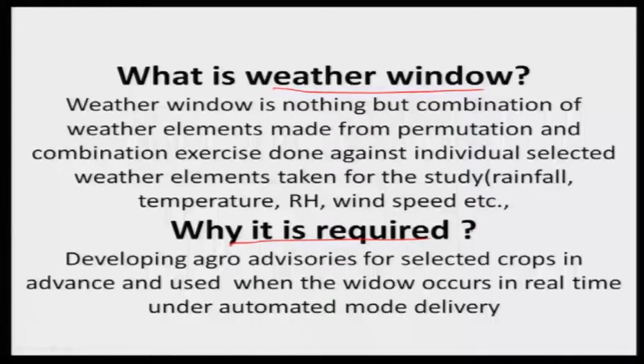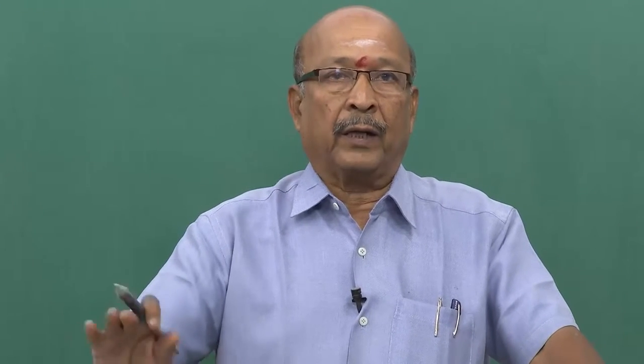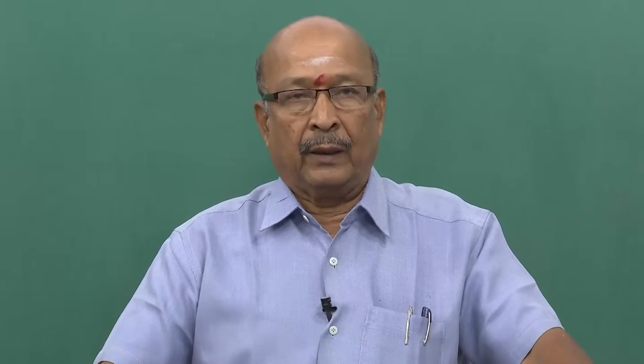Why is the weather window required? It is for developing agro advisories in advance for selected crops. Normally in the case of human intervention, after receipt of the forecast, you prepare agro advisories. But when a weather window is already prepared, you also prepare the agro advisory in advance and put it in the computer. These weather windows provide an opportunity to prepare agro advisories in advance so that people can adopt them in a mass way — en masse adoption is highly possible through this approach.